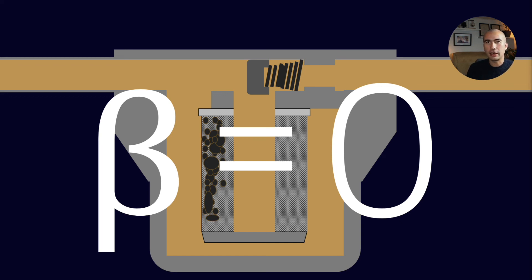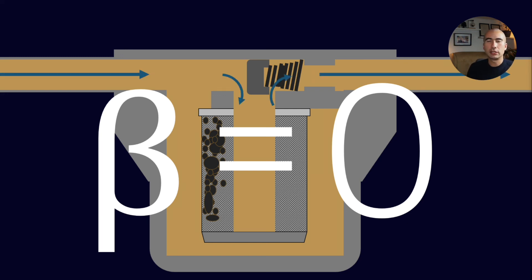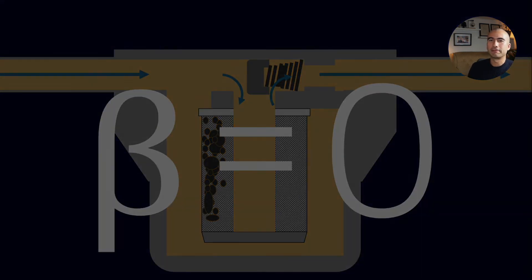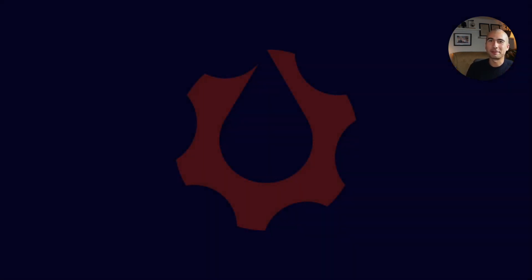Hopefully that's been a good general explainer for the beta ratio and how it works in conjunction with filters. Next time you see the number, remember you can only compare beta ratios of the same micron size — that's probably the most important takeaway. This has been Lubrication Explained.